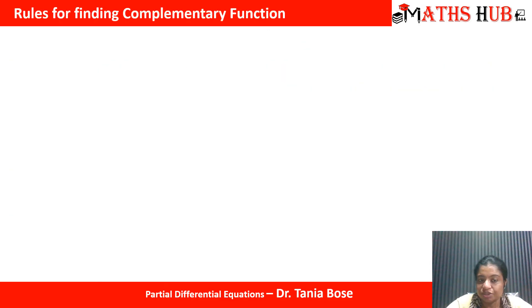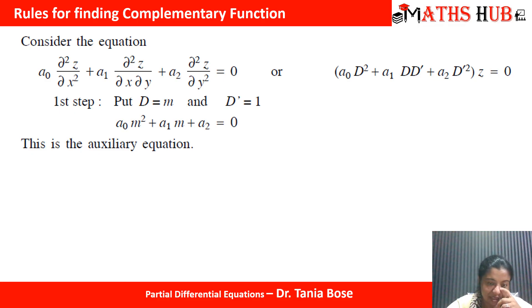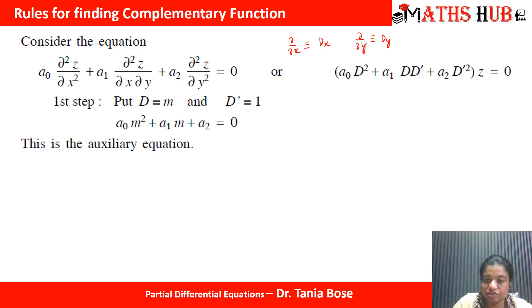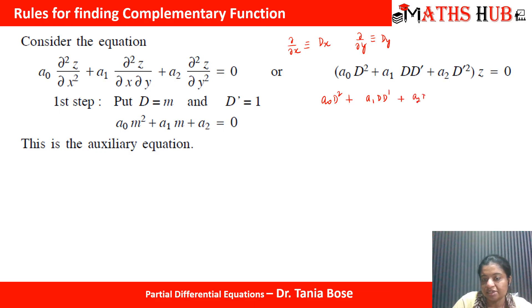To find the complementary function, we convert the general second order PDE into an auxiliary equation by substituting ∂/∂x = D and ∂/∂y = D'. We then remove z and write the auxiliary equation as: a₀D² + a₁DD' + a₂D'² = 0.